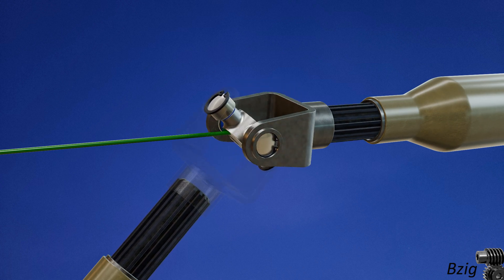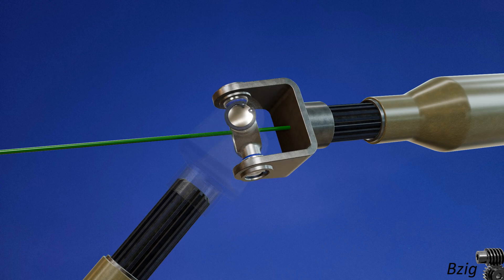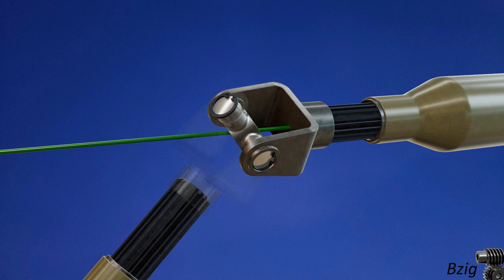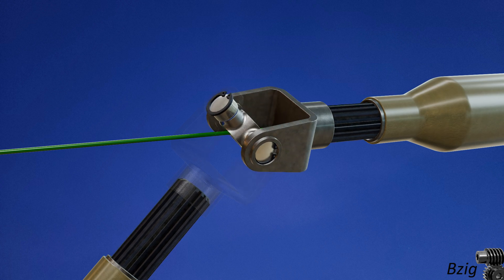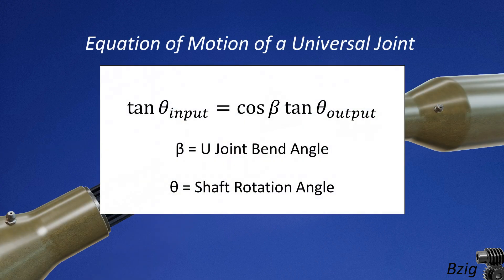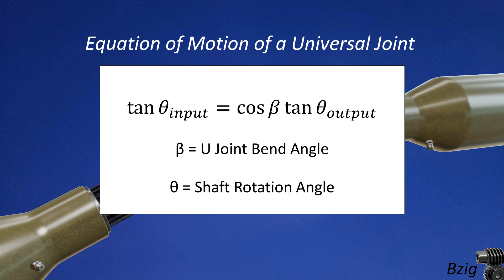It's this motion towards and away from the input's center of rotation, combined with the constraint that the cross is physically connected to both the input and the output shaft, that causes the variation in shaft rotation speed. The equation of motion for the two drive shaft angles is shown on the screen.